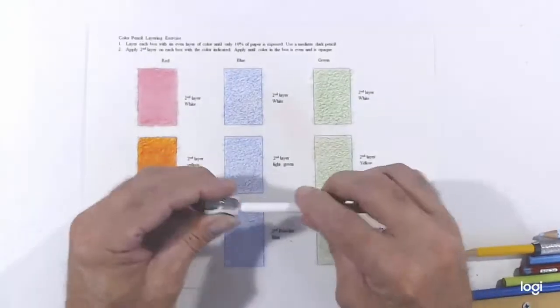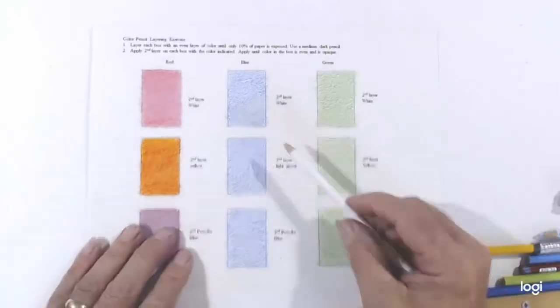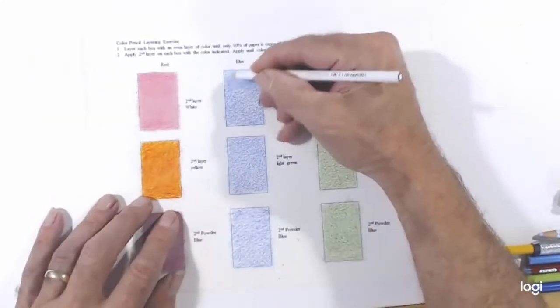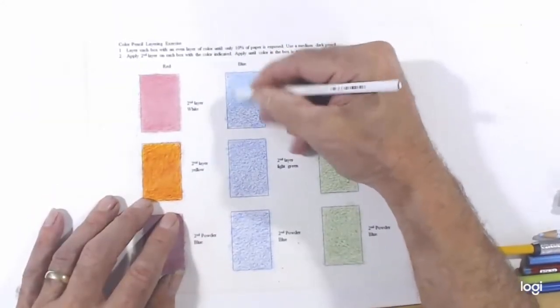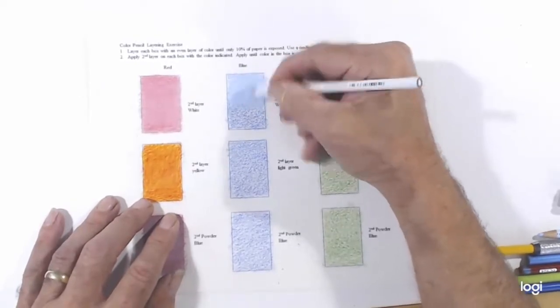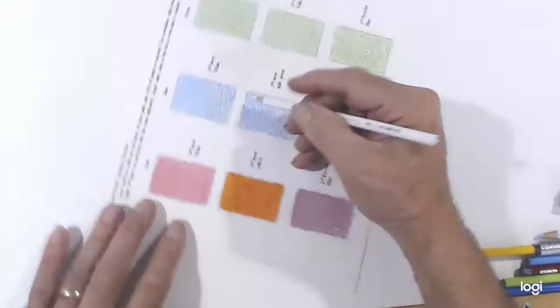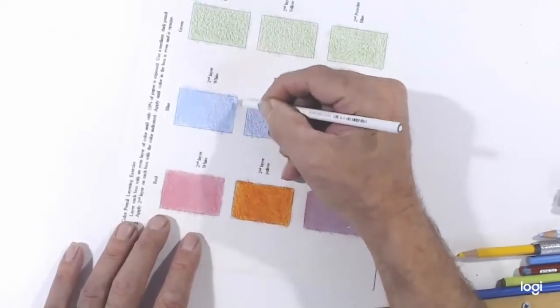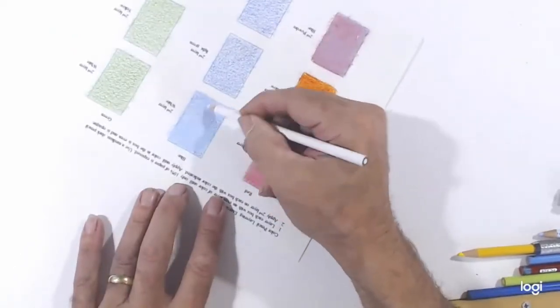Now I'll go ahead and work on the blue boxes and the green. The top box on the blue will get white, the middle box gets a green, and the lower box gets powder blue. I will try to make them very even and opaque like I did the first boxes.